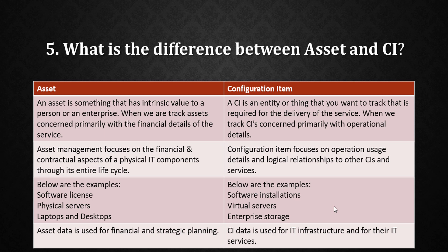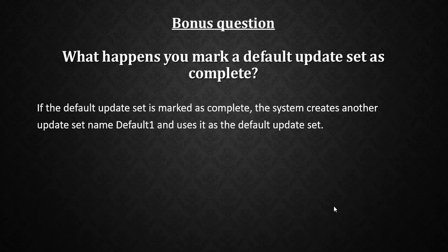The next question is: what happens when you mark the default update set as complete? This is an entry-level question for someone with two to three years of experience. If the default update set is marked as complete, the system automatically creates another update set named 'Default' and uses it as the new default update set. So nothing breaks — the system automatically creates a new update set named 'Default'.